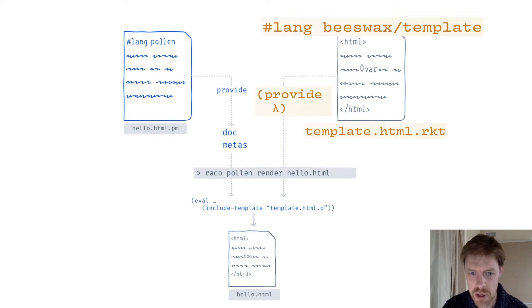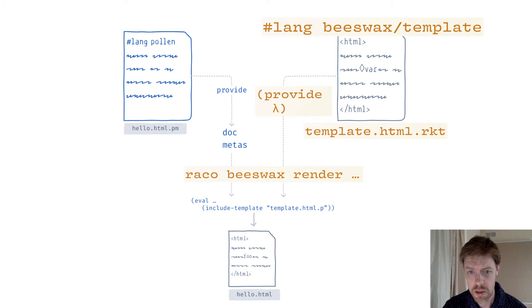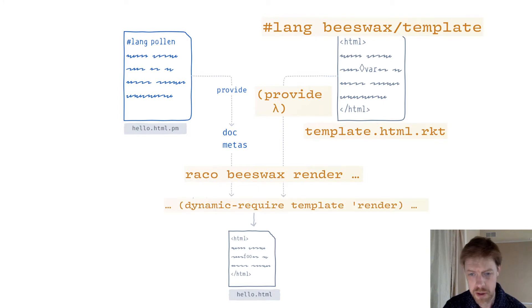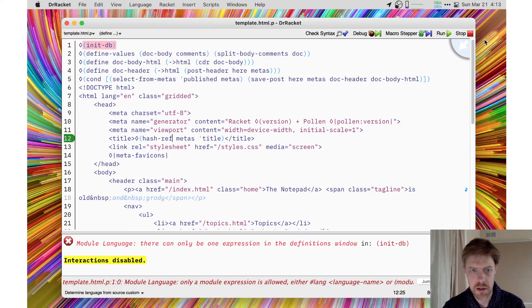What code does that Racket module provide to other Racket modules? It provides a function which can take the doc and metas and render them into the template for you. The raco pollen render command line interface does not have any awareness of this new scheme, so we have to come up with a substitute for that as well. I propose to make my own raco beeswax render that will take source documents and marry them up with Beeswax templates. Rather than running eval, it will dynamically require that render function and pass doc and metas into it to get that HTML file.